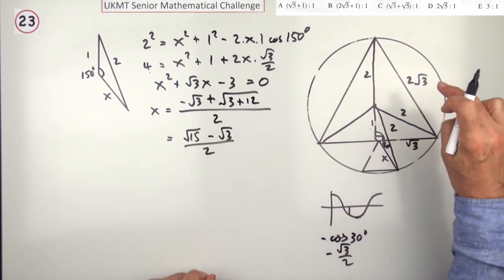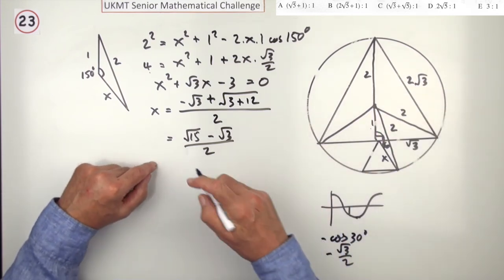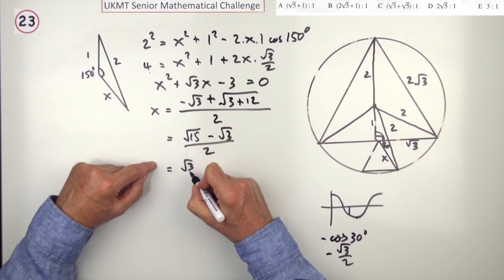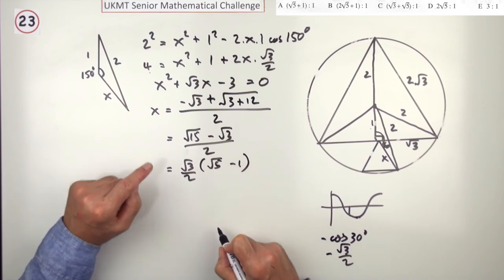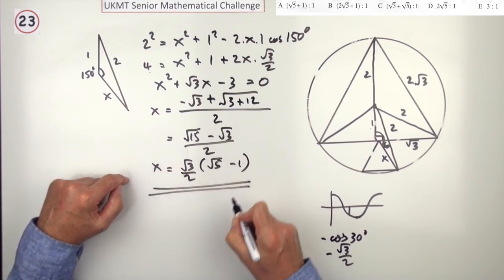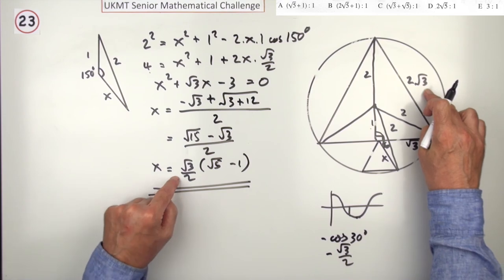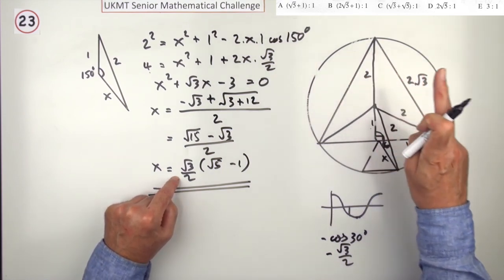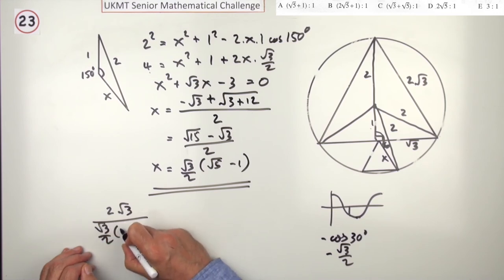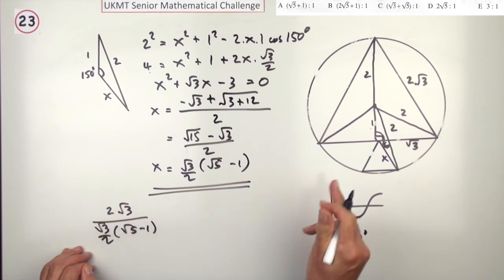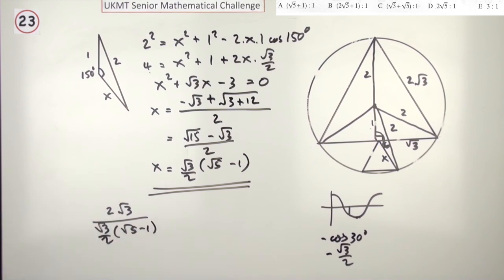So the ratio of the sides is the ratio of this to that. I think I'll just take out that root 3. Taking out the root 3 leaves a root 5 minus 1, put the 2 under that. So that's the value of x. So the ratio would be this to that. But notice all the answers are something to 1, so I'll need to divide this bit out. I need to do 2 root 3 divided by root 3 upon 2 times root 5 minus 1 to 1.